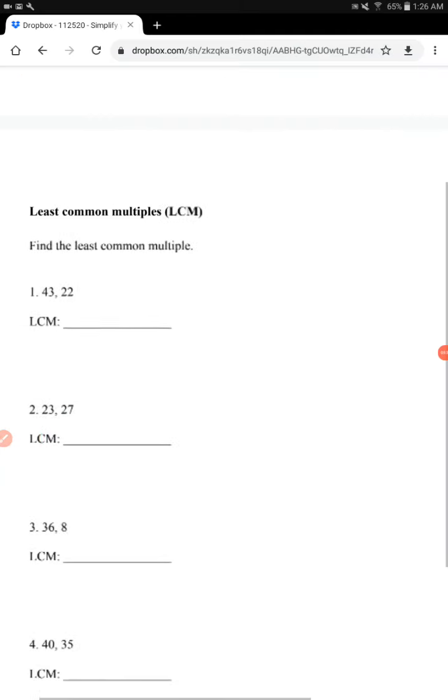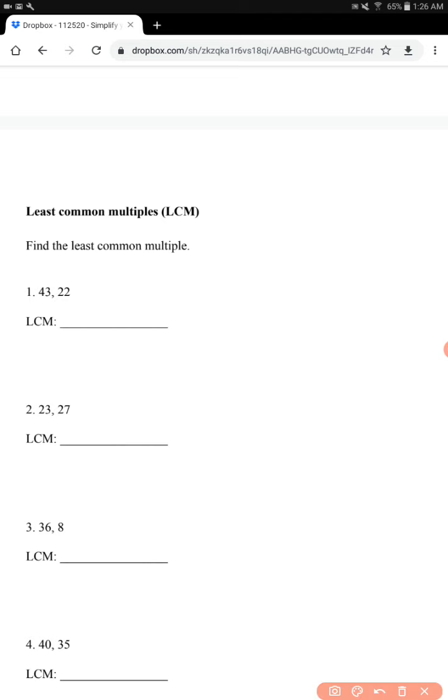Then, least common multiples. So if you remember, least common multiples are exactly what it is. The least common multiple that is the same between two numbers that is the least, the smallest number. So I didn't explain that very well, sorry. So for example, between 2 and 10, just a completely random example.